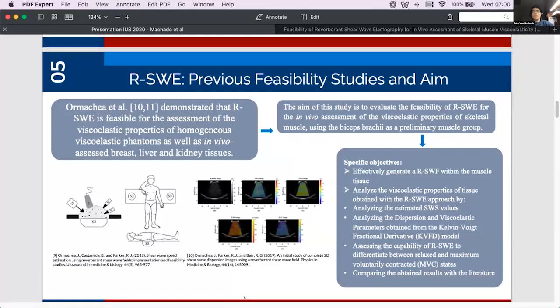So there are two main specific objectives in this study. The first one being to effectively generate a reverberant shear wave field within the muscle tissue. And the second one to analyze the viscoelastic properties of the tissue by analyzing both the estimated shear wave speed values and the viscoelastic parameters obtained from the Kelvin-Voigt fractional derivative model to see if the technique is able to differentiate between relaxed and contracted states.